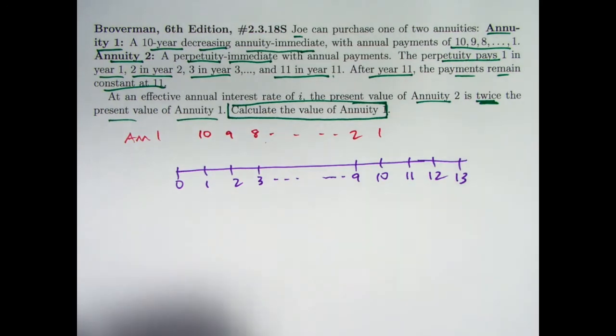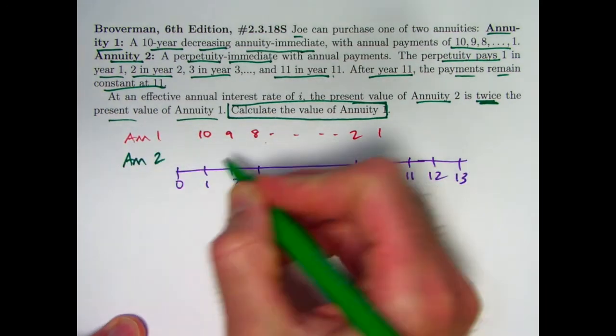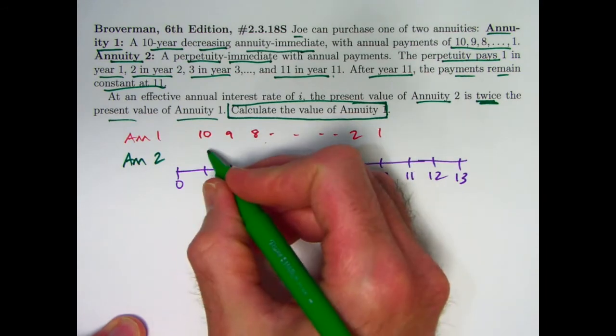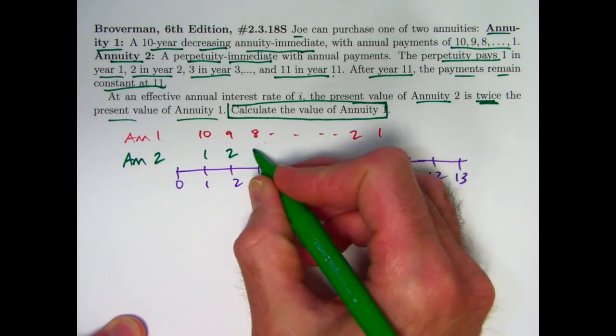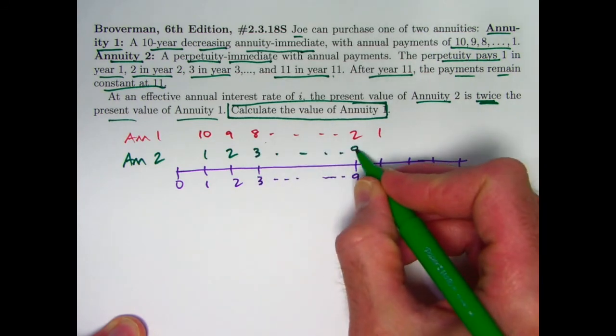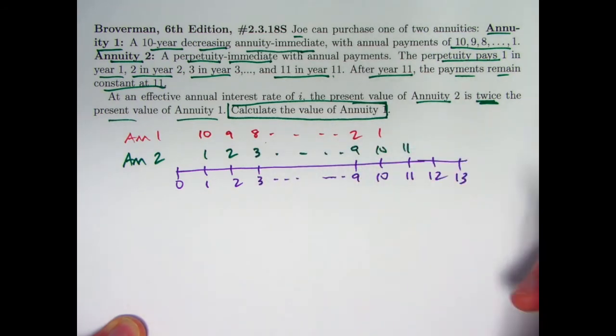How about annuity 2? First payment of 1 is at time 1, 2 at time 2, 3 at time 3, etc. 11 at time 11. And then it stays constant at 11 thereafter.